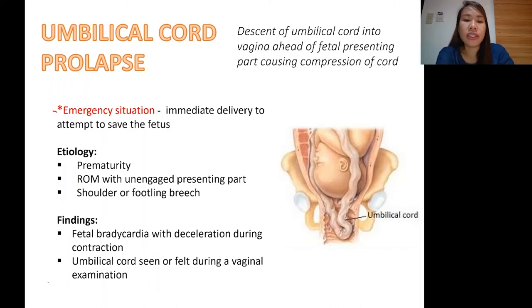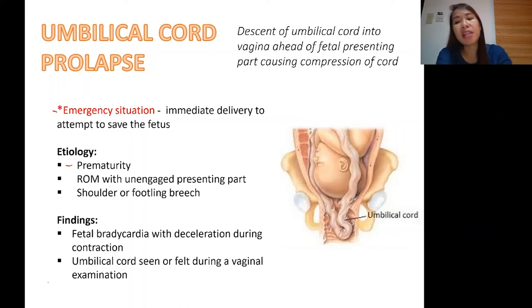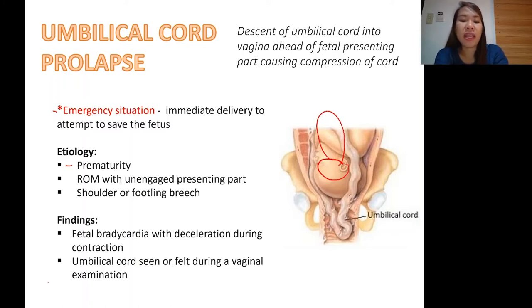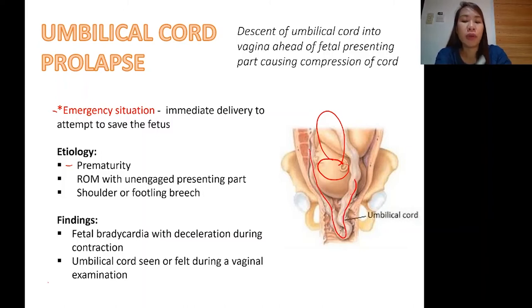When we say emergency situation, we have to deliver the baby immediately to attempt to save the fetus. What are the causes of umbilical cord prolapse? First, we have prematurity. When we say premature, we think of a small baby. Since the baby is small, the presenting part — if it is the head — is still floating and not yet engaged in the lower uterine segment. So if the baby is premature, there is a possibility that the cord will prolapse.